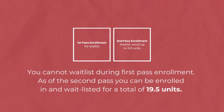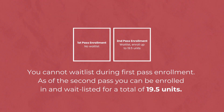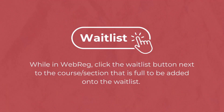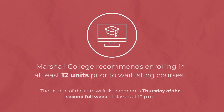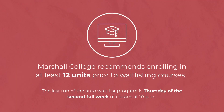You cannot waitlist during first pass enrollment. As of second pass, you can be enrolled in and waitlisted for a total of 19.5 units. To waitlist, log into WebReg, then search the course and click the waitlist button next to the course and section that you would like to add that is full. You will then be added to the waitlist. Marshall College recommends enrolling in at least 12 units prior to waitlisting courses.